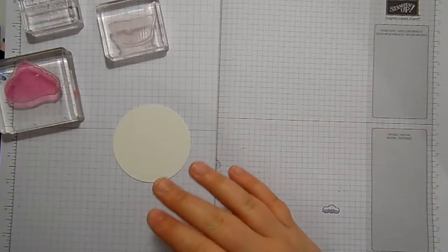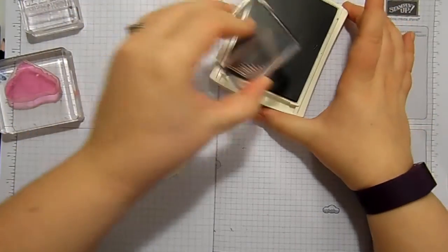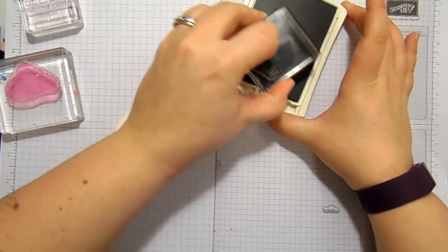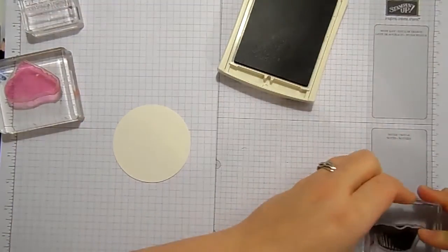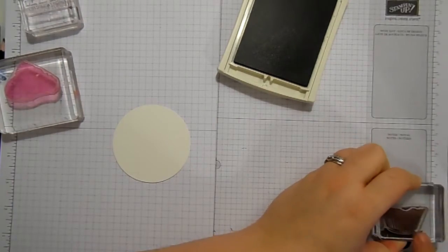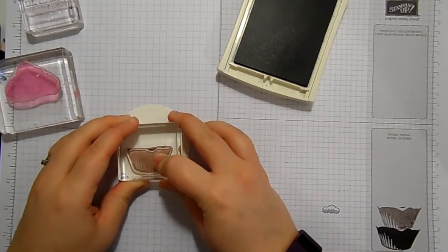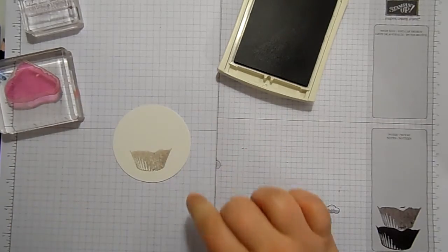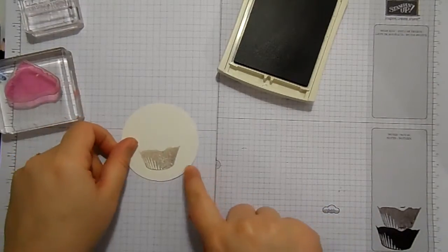So let's stamp the base of our cupcake first. I've got Early Espresso ink and I'm going to ink the base of the cupcake up, and I'm going to stamp it off twice. And then I'm going to stamp that straight down onto our watercolor paper. So it's really quite faint actually.